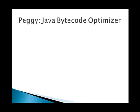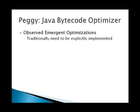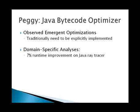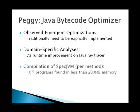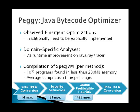We have implemented this approach as a Java bytecode optimizer called PEG, which optimizes each method separately. In our experiments, we observe the interesting phenomena of emergent optimizations, which produce optimizations we never had to explicitly code. Using domain-specific analyses, emergent optimizations were able to produce a 7% runtime improvement for a Java ray tracer on top of the optimizations produced by Java and the JIT. We compiled the spec JVM and on average found more than 10 to 30 equivalent versions of each method without ever using more than 200 megabytes of memory. Most stages were quite fast except for our global profitability heuristic, which is not surprising since pseudo-Boolean programming is NP-complete. We believe there is room for drastic improvement and already have some ideas for making this stage faster.